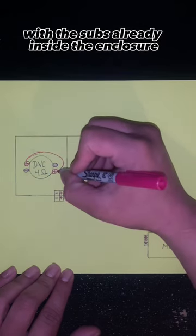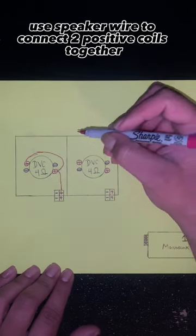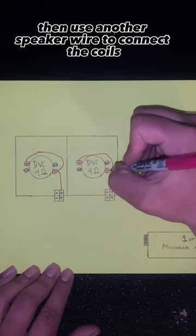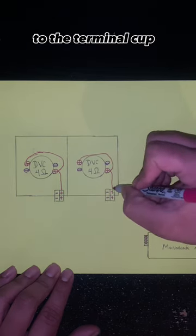With the subs already inside the enclosure, use speaker wire to connect two positive coils together, then use another speaker wire to connect the coils to the terminal cup.